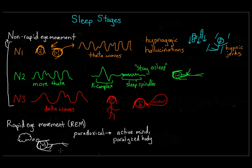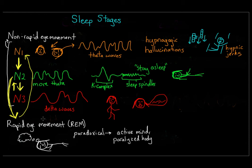In a normal night of uninterrupted sleep, you cycle through these stages about four or five times, and it takes about 90 minutes to complete one cycle. The order within a cycle tends to go from N1 to N2 to N3, then back to N2 before entering REM sleep, then back to N1, and it starts all over again. How long each stage lasts depends on your age and how long you've been asleep. You tend to get more slow wave sleep in the first few hours and more REM sleep right before waking — so if you want to remember your dreams, set your alarm 15 minutes earlier than usual to wake up during REM.